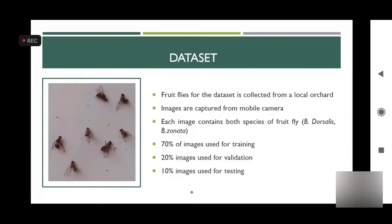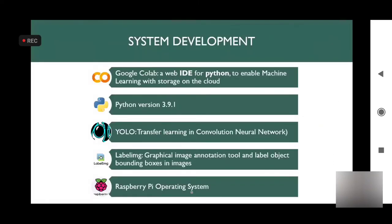For model training, we collected the dataset manually from a local orchard with images captured on a mobile phone. The images contain two fruit fly species: Bactrocera zonata and Bactrocera dorsalis. 75% of the images were used for training, 25% for validation, and 10% for testing. For system development, we used Google Colab, which provides GPU services. Python version 3.9.1 was used for coding, along with the YOLO algorithm and transfer learning with convolutional neural networks.